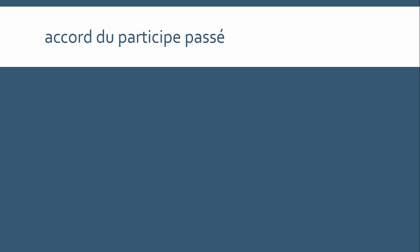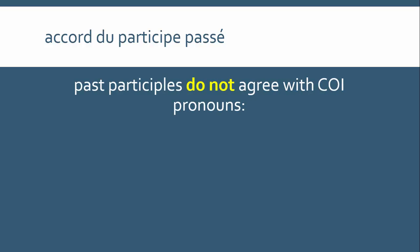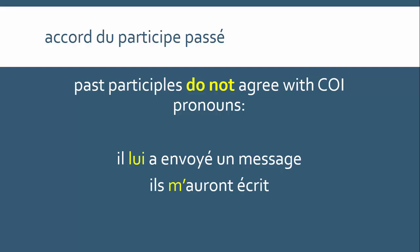In the direct object pronouns video, I briefly touched on past participle agreement. Past participles have to agree with direct object pronouns, but they do not agree with indirect object pronouns. For example, 'il lui a envoyé un message' — even if 'lui' means 'to her,' 'envoyé' will never have an extra 'e,' because 'lui' is indirect. 'Ils m'auront écrit' — they will have written to me — even if I were female, I would not say 'écrite,' because 'écrire' takes 'à quelqu'un,' so the 'm'' is indirect and there is no agreement. And 'je leur avais dit' — 'leur' refers to more than one person, but again it is indirect, so there is no 's' at the end of 'dit.'